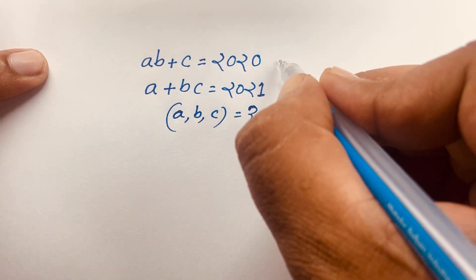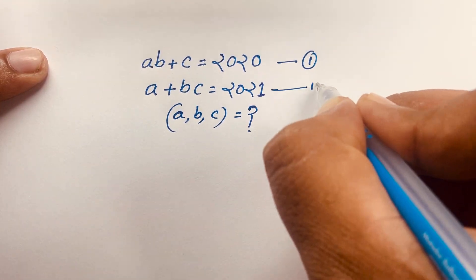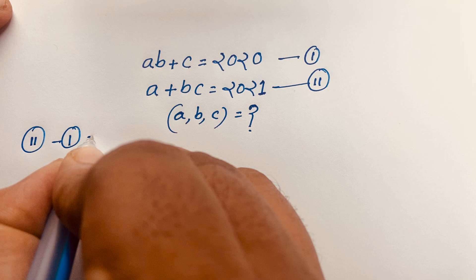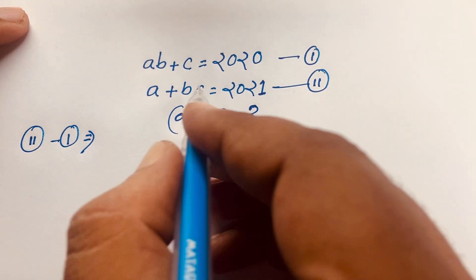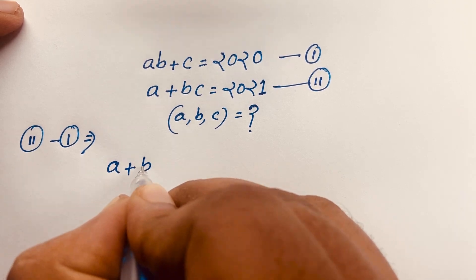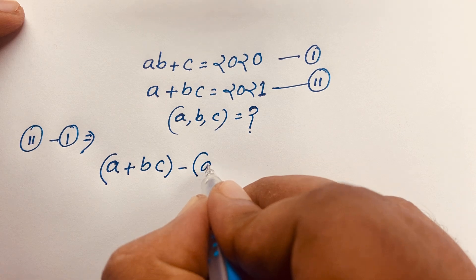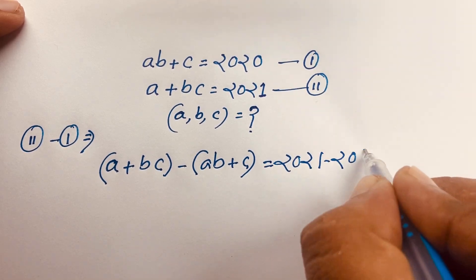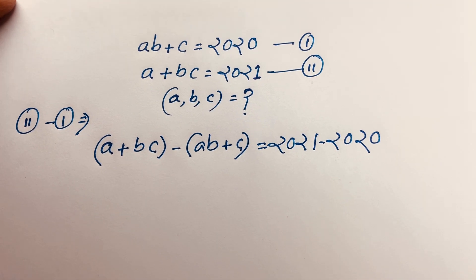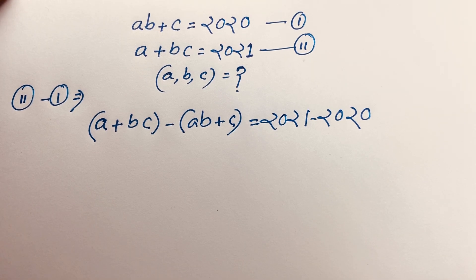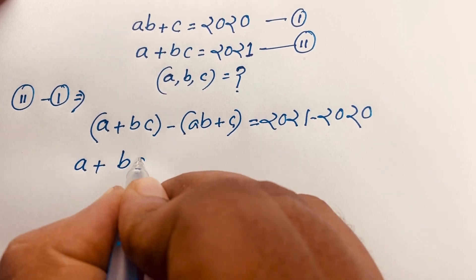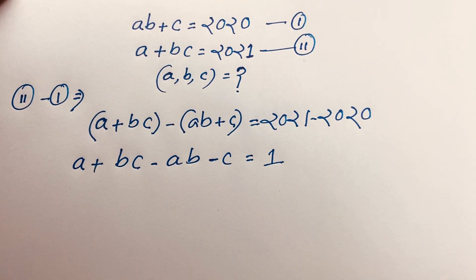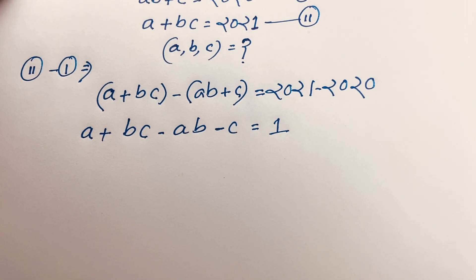This is our first equation and this is our second equation. I subtract the second equation minus the first equation. So the second equation is a + bc minus the first equation ab + c, which equals 2021 minus 2020. Subtracting both equations gives a + bc minus ab minus c equals 1.